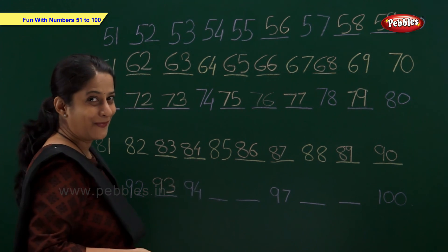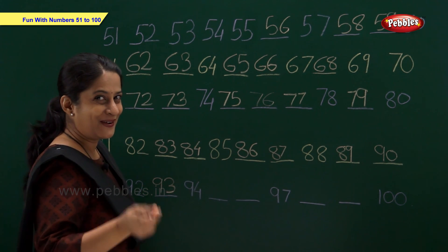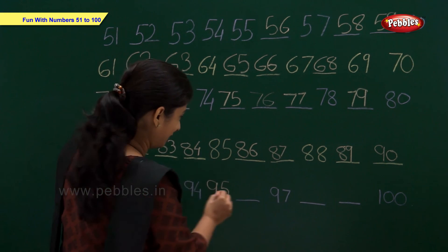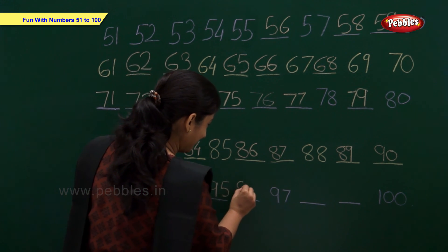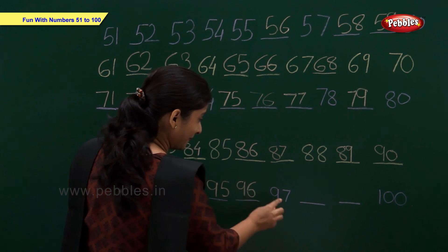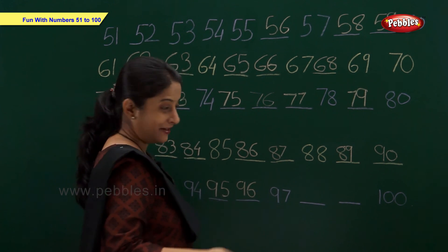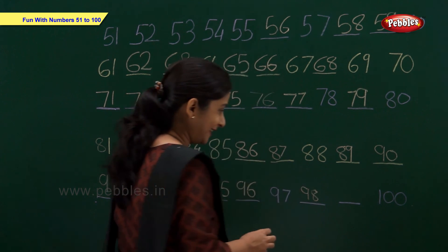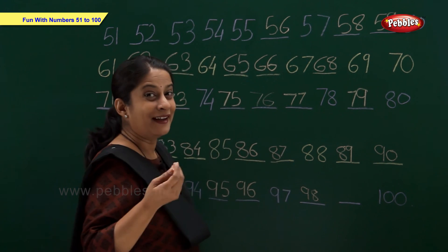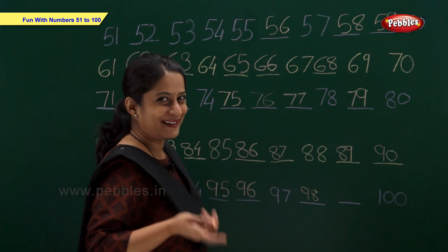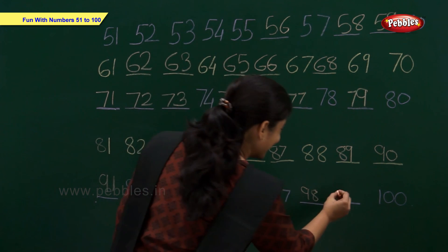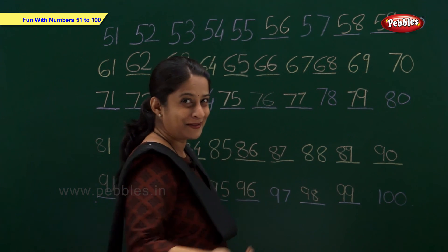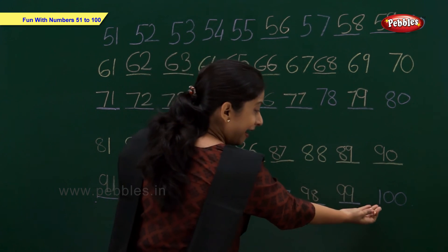94. And after 94? Correct, 95. 96. 97. 98. And after 98? 99. And 100.